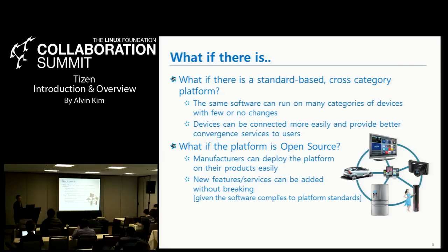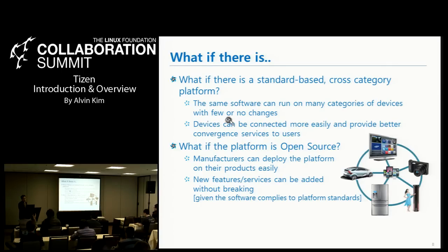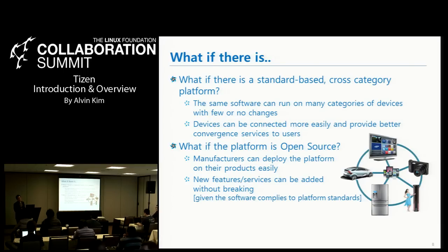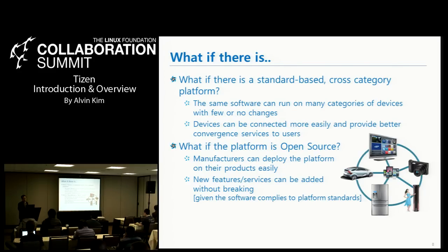What if there is a standard-based cross-category platform? If we have that kind of platform, the same software can run on many categories of devices with few or no changes. Devices can be connected more easily. And if the platform is open source, thanks to the open source philosophy and community, manufacturers and developers can better understand the inside of the platform and deploy it on products easily. New features or services can be added and the platform itself will be optimized more efficiently.